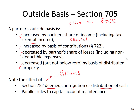One important thing to note — and you'll want to compare this to S corporations later on — when it comes to partnerships, when we have a distribution, we look at the adjusted basis at the date the distribution occurs. You'll contrast this with S corporations, where it happens at the end of the year.